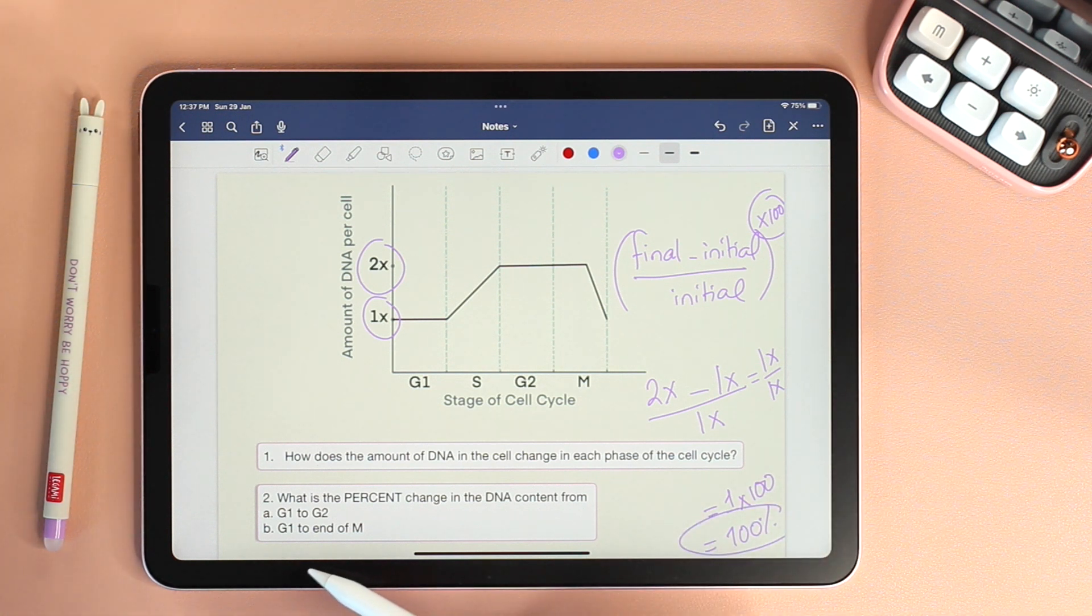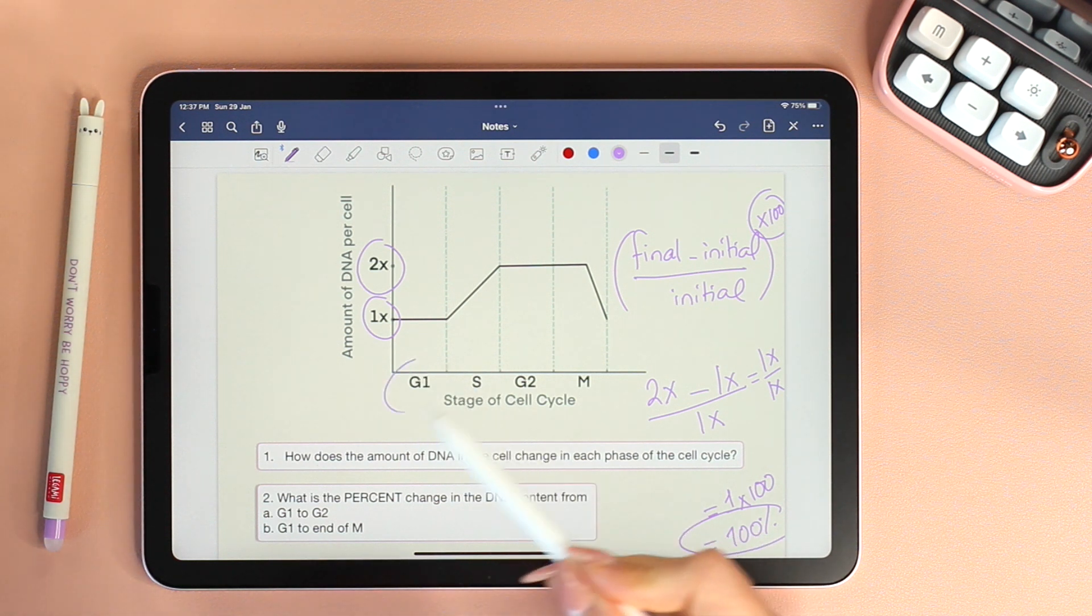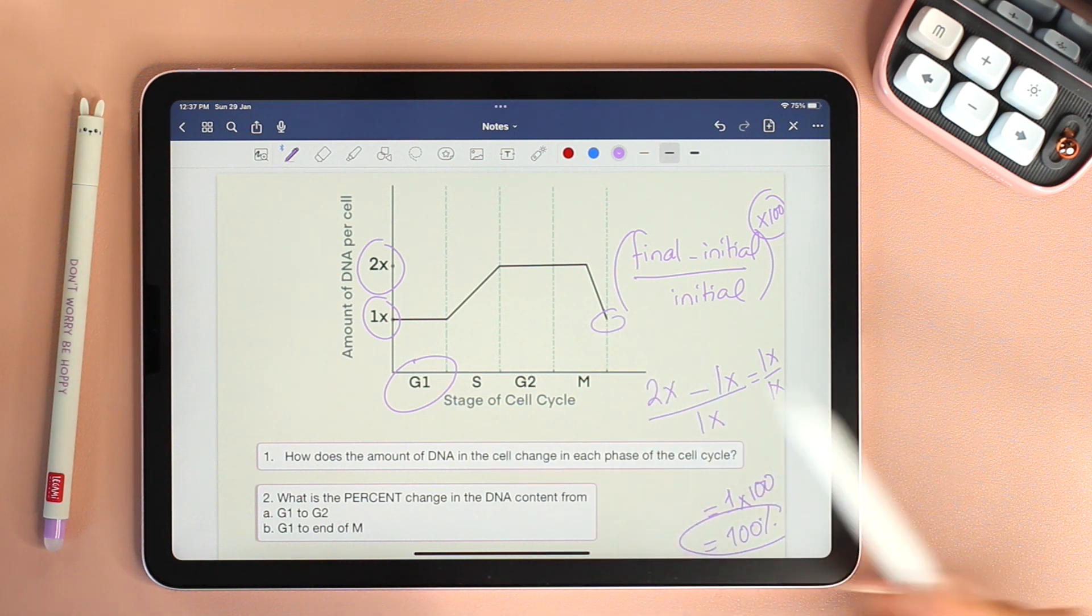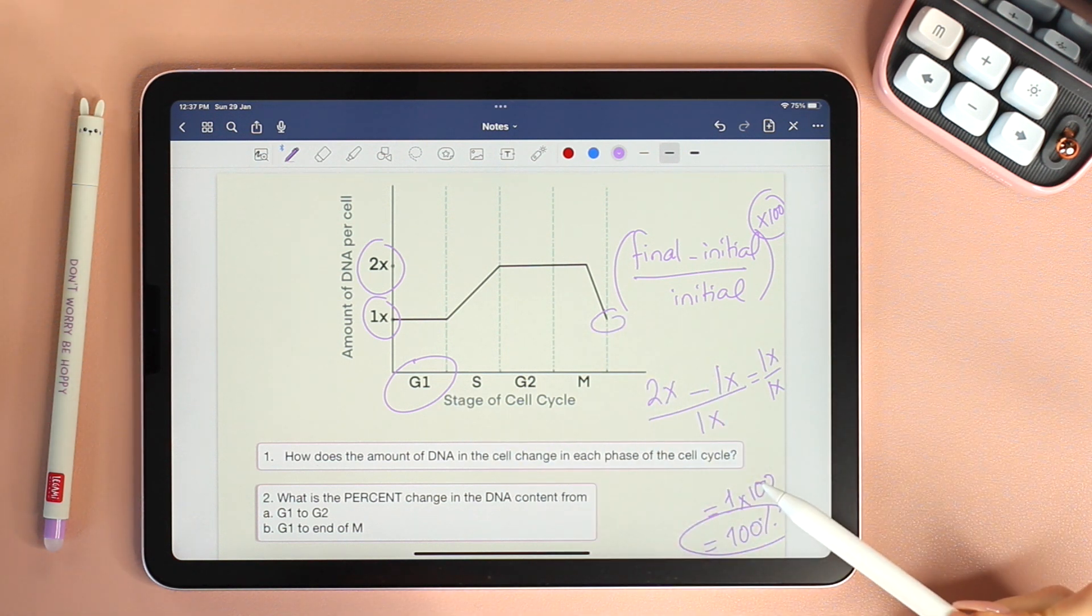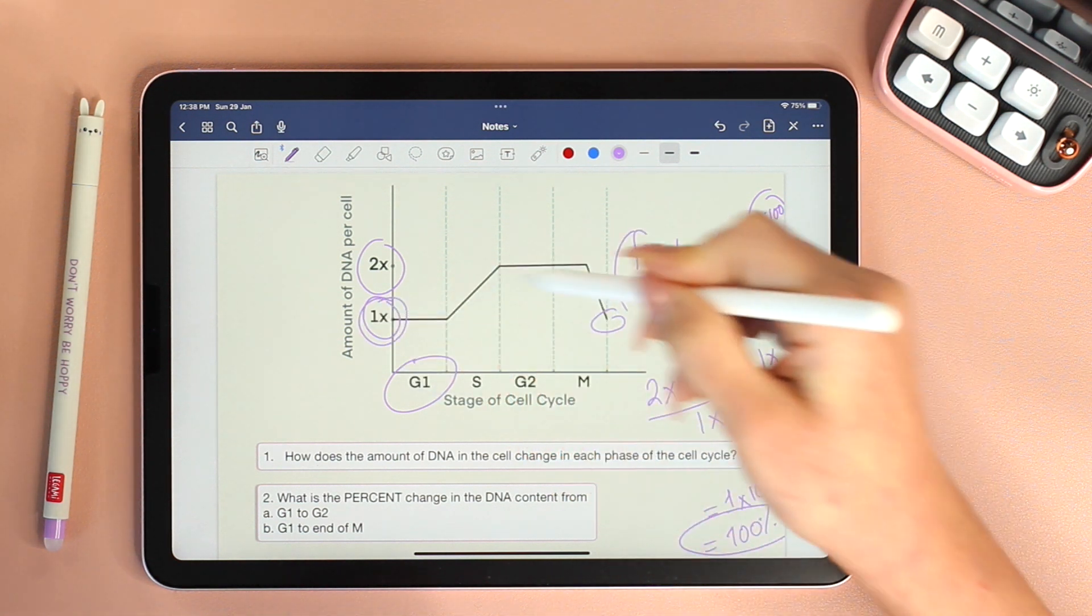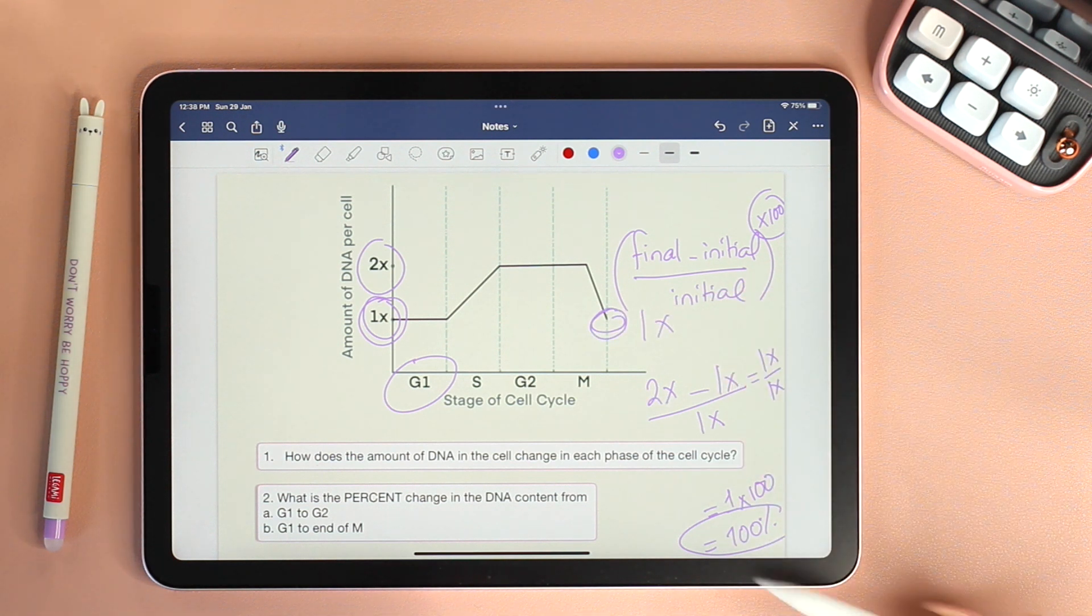Now what about B? From G1 to the end of M. I think this one is straightforward. It doesn't even need to apply the formula because in the beginning it was 1x and by the end of M we go back to 1x. So in this case, the percent change is 0%.